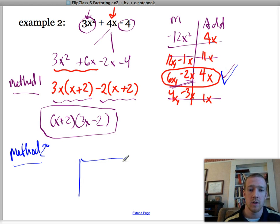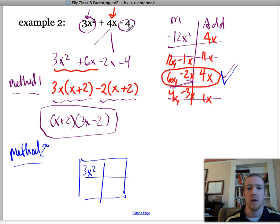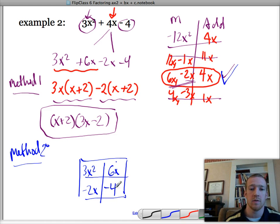So what I do is I rewrite my grid. I'm going to use this multiplying grid, but I'm going to use it backwards. So the 3x squared goes here, the negative 4 goes here, and now these two boxes are going to have a negative 2x and a 6x. It doesn't matter which one. I'll just do the 6x here and a negative 2x there.